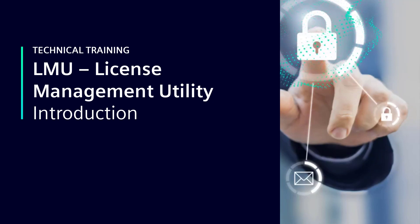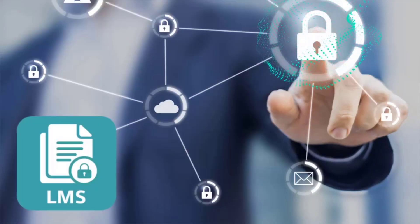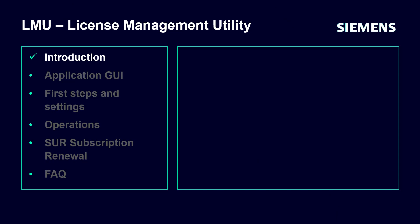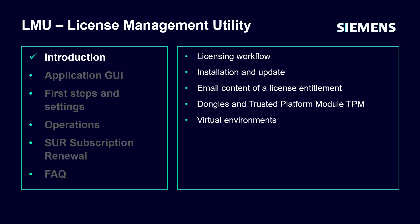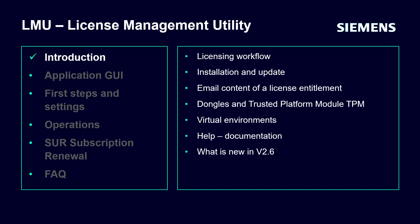This is an introduction to the License Management Utility (LMU). We will give you an overview of the licensing workflow, information about the installation and update of the software, an overview of email content of a license entitlement, information about license certification with dongles and the Trusted Platform Module (TPM) chip, support for physical and virtual environments, an introduction to the help documentation, and what is new in version 2.6.